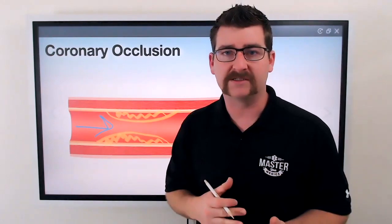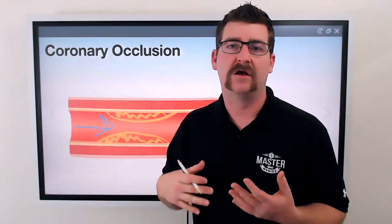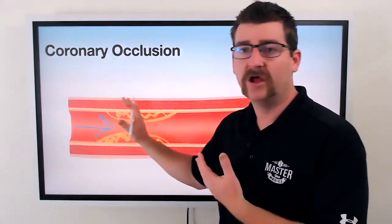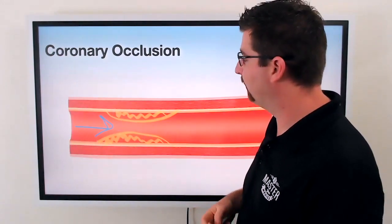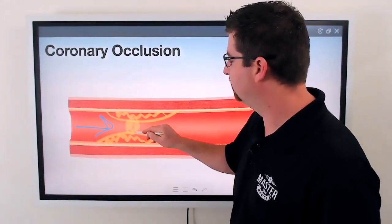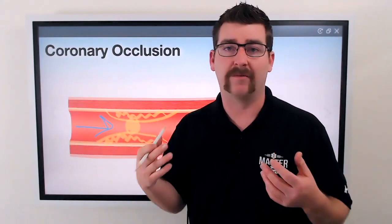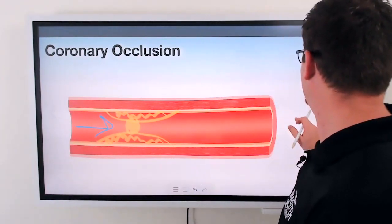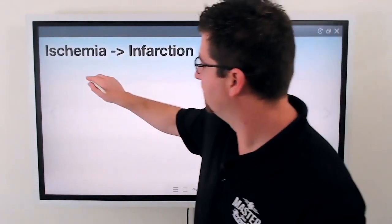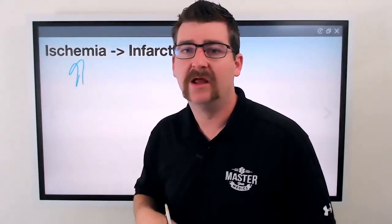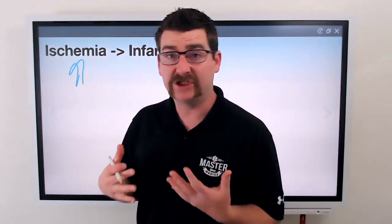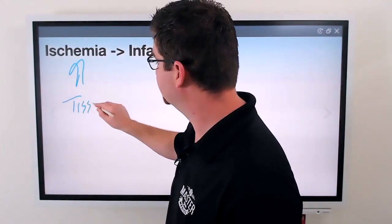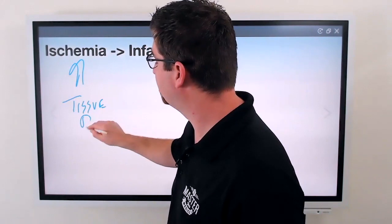So that means we have a decreased amount of perfusion — hypoperfusion — a decreased amount of this blood going through. We can even get a complete occlusion, possibly. This can be from plaque, this can be from a blood clot, et cetera. What that hypoperfusion causes is something called ischemia. Ischemia is basically tissue damage, and that tissue damage is reversible.